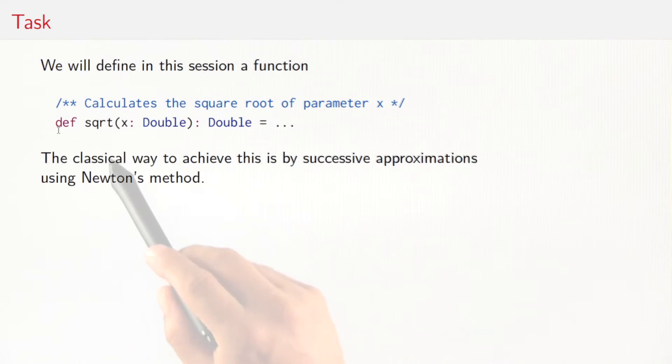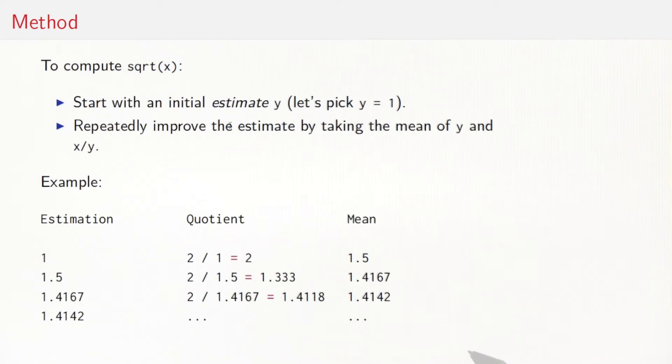What that means is that we want to define a function with the signature. It takes a double, it gives me back a double, and the return value is the square root of its parameter x. The classical way to compute that is by successive approximations using the method of Isaac Newton. To compute square root of x, we start with an initial estimate value. It doesn't really matter what that estimate is as long as it's positive, so let's pick y equals one. And then we repeatedly improve the estimate by taking the mean of the old estimate y and the value of x divided by y, where x is the value we want to draw the root from.